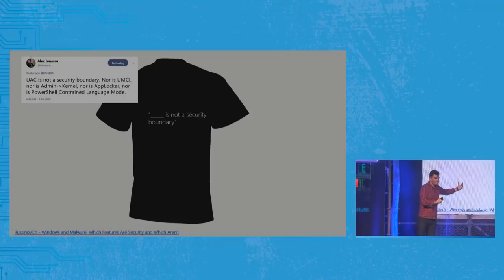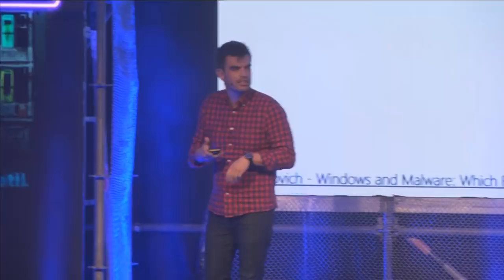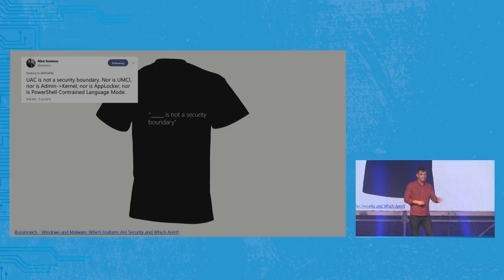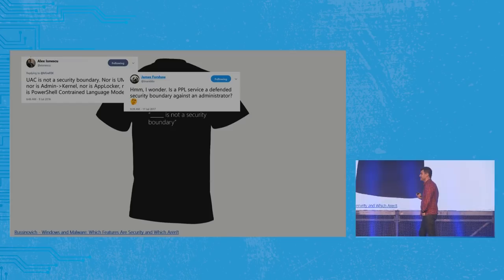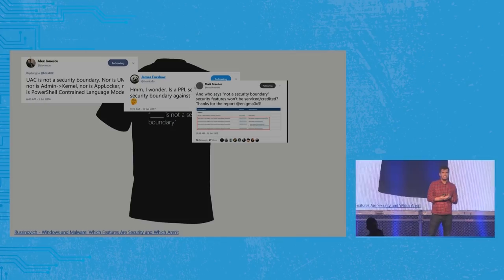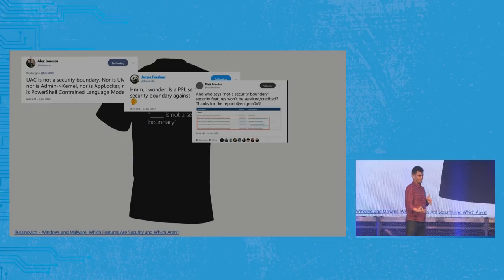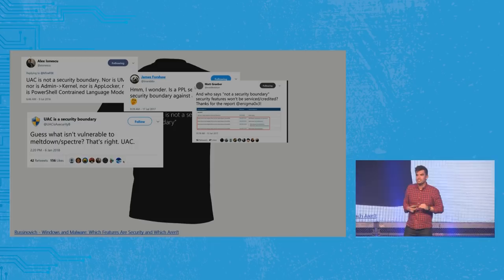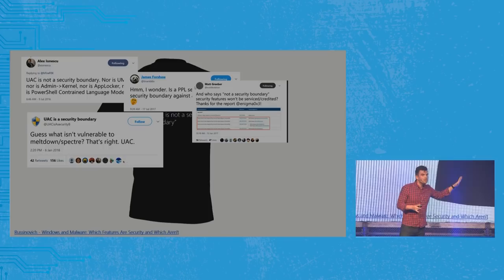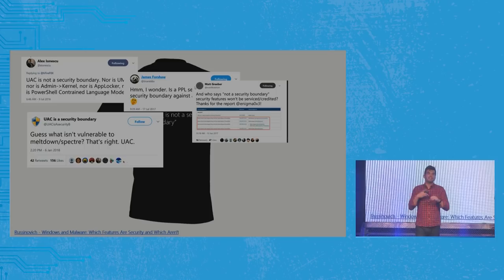My buddy Alex gives a big list of features — UAC being the top — that are security features but not security boundaries. There's James asking 'Is PPL a security boundary?' with the obligatory 'I don't know.' And Matt saying 'This is even more confusing because I've heard Device Guard is not a security boundary but they serviced some bugs I sent.' People care about this so much there are actually fake news operations to get UAC to become a security boundary — there's a Twitter account called 'UAC is a security boundary' claiming UAC fixes Spectre and Meltdown.